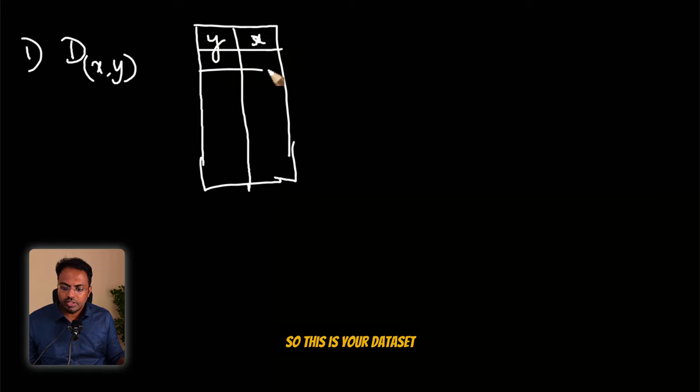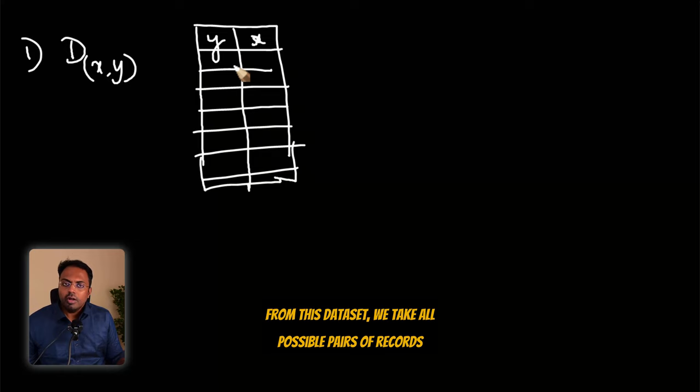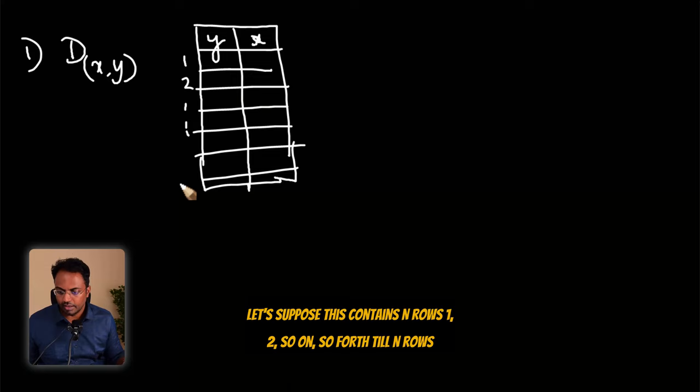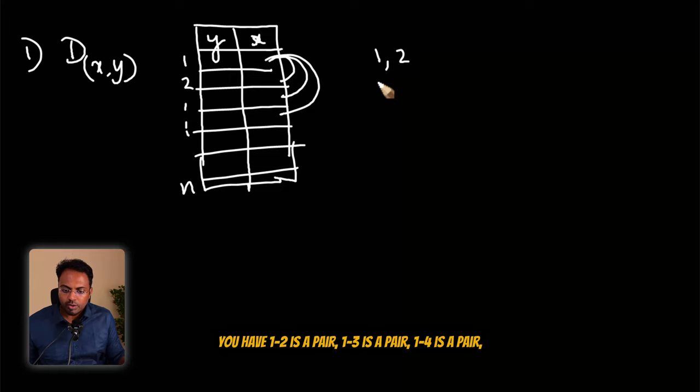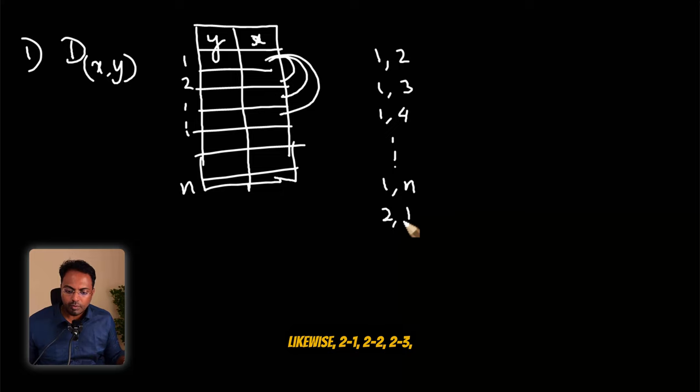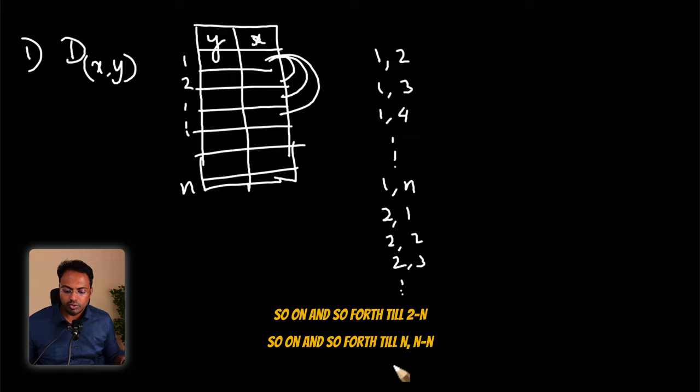From this data set, we take all possible pairs of records. Let's suppose this contains n rows: 1, 2, so on, so forth, till n rows. You take all possible combinations, so 1 and 2, 1 and 3, 1 and 4, each of this is a pair. So you have 1,2 is a pair, 1,3 is a pair, 1,4 is a pair, so on and so forth till 1,n. Likewise 2,1, 2,2, 2,3, so on and so forth till 2,n, and so on till n,n. So a lot of different pairs exist.